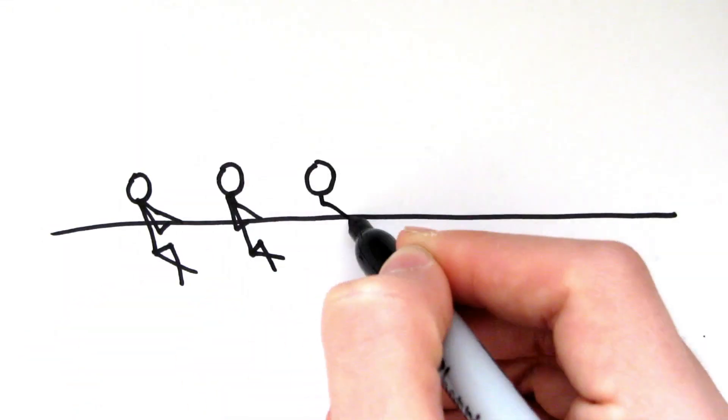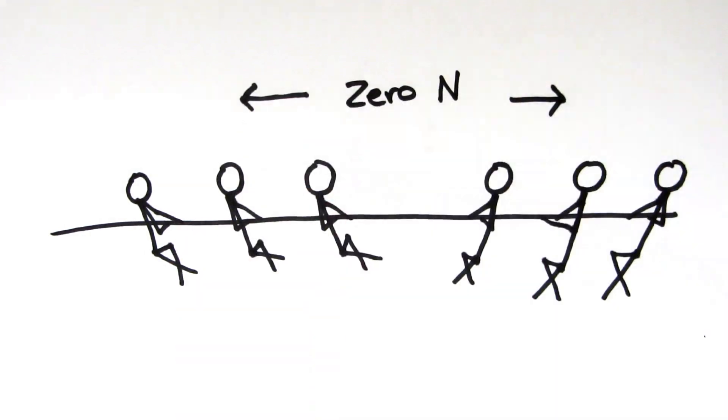For example, in a tug of war competition, the resultant force in a stalemate is zero, because both teams are pulling on the rope with equal force.